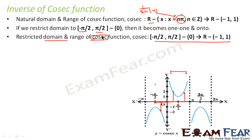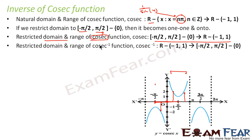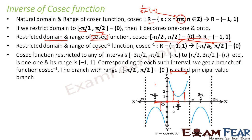To find the domain and range of cosec inverse, we simply flip the restricted domain and range of cosec. So the domain of cosec inverse is any real number minus the interval (−1, 1), and the range is (−π/2, π/2) \ {0}.